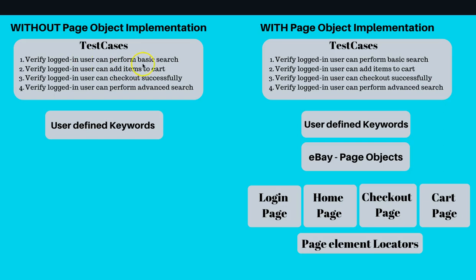Then we externalized those keywords into user-defined keywords, and in the user-defined keyword Robot file we called the Selenium Library, which is the external library. In the test cases, we were no longer calling the Selenium Library directly — we were referencing the resources of the user-defined keywords.